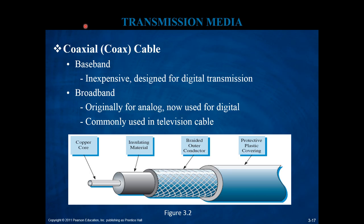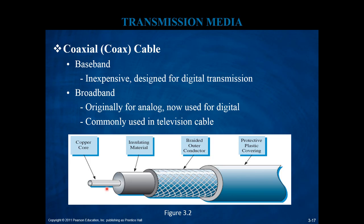Then you have the coaxial or coax cable. There are two types: baseband, which is inexpensive and designed for digital transmission, and broadband, which was originally meant for analog transmission. Most broadband infrastructure was laid by cable TV companies to transmit analog signal to your TV. Eventually the same infrastructure started being used for digital signal as well, so with one broadband cable you get TV services, internet connection, and perhaps even phone. A typical coaxial cable has a copper core, insulating material, a braided outer conductor, and protective plastic covering.